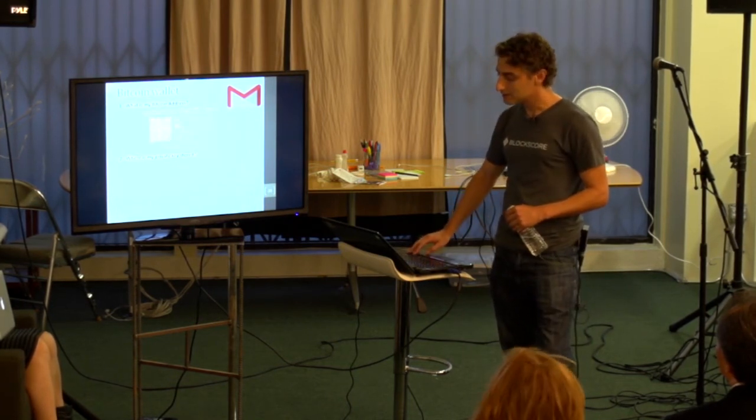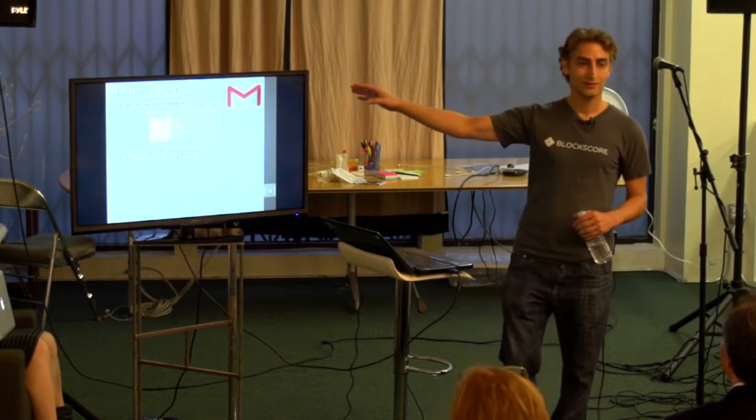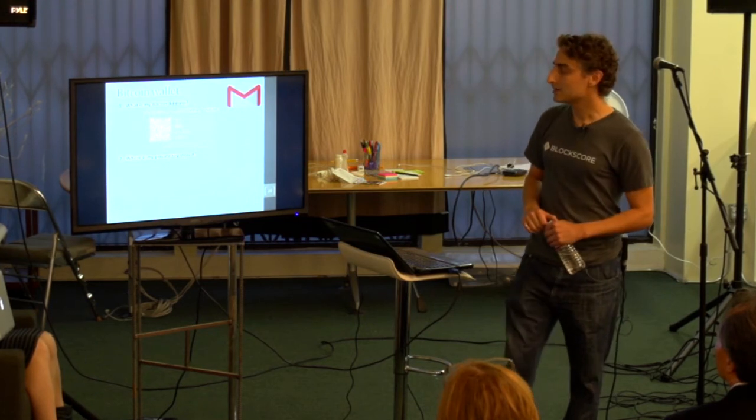So Bitcoin address looks like this. It's just a random string of characters that doesn't really mean anything. And sometimes it's represented as a QR code.